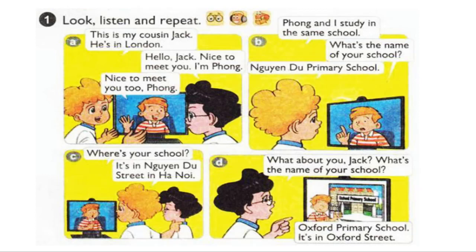D. What about you, Jack? What's the name of your school? Oxford Primary School. It's in Oxford Street.